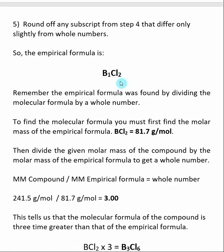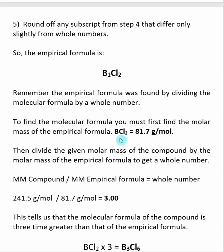Now we are going to find the molecular formula. Recall that empirical formulas are found by dividing the molecular formula by a whole number. Going the other direction, we take the empirical formula and multiply by a whole number to get the molecular formula. To find that whole number, we first determine the molar mass of our empirical formula B1Cl2 using the periodic table: the atomic weight of boron plus two times the atomic weight of chlorine gives 81.7 grams per mole.